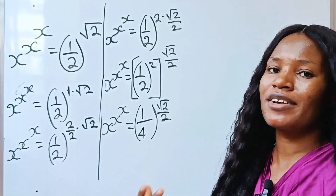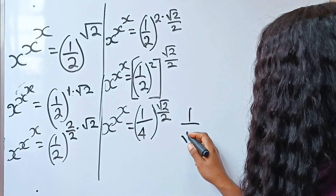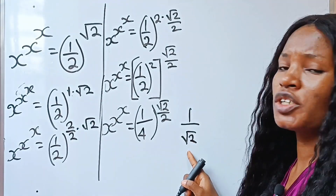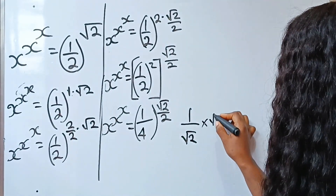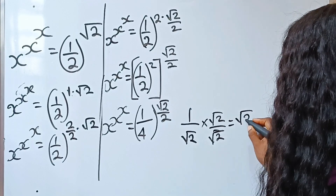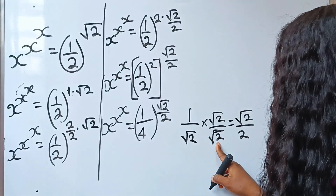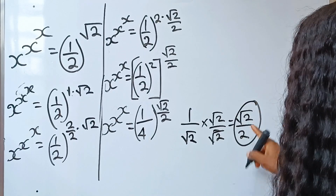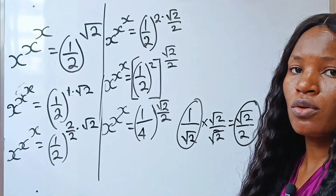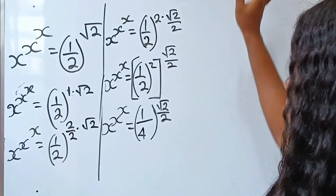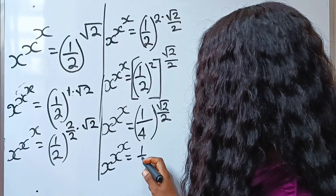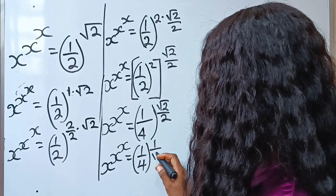Root 2 over 2 can be written as 1 over square root of 2. Because when you have 1 over square root of 2 and you rationalize it — multiply by root 2 divided by root 2 — you get root 2 divided by 2, since root 2 times root 2 gives us 2. So square root of 2 divided by 2 can be written as 1 divided by root 2. That means I can rewrite this as x to the power of x to the power of x is equal to 1 over 4 raised to the power of 1 over root 2.